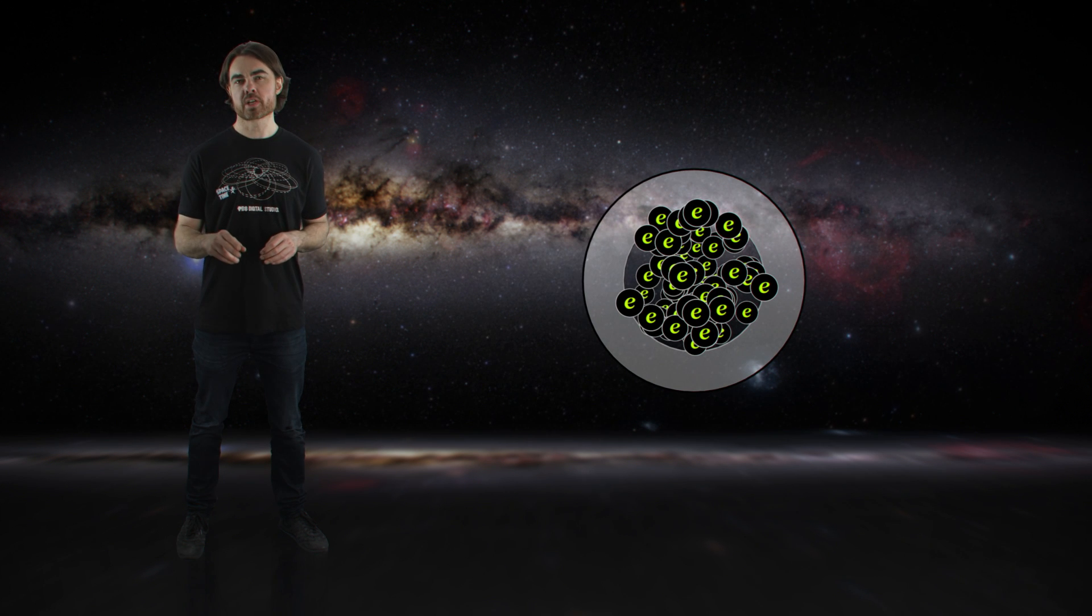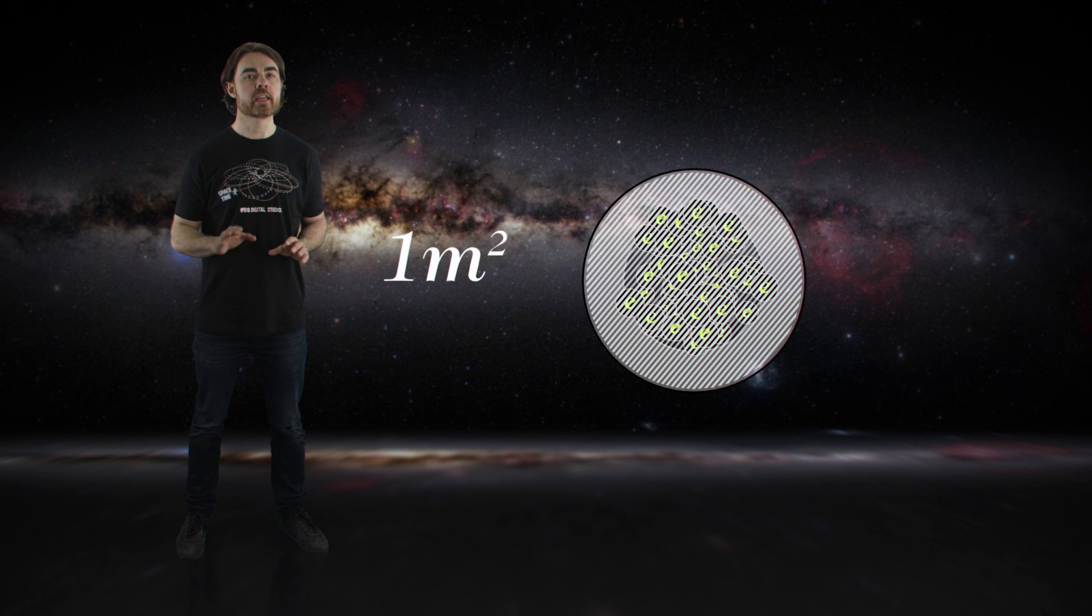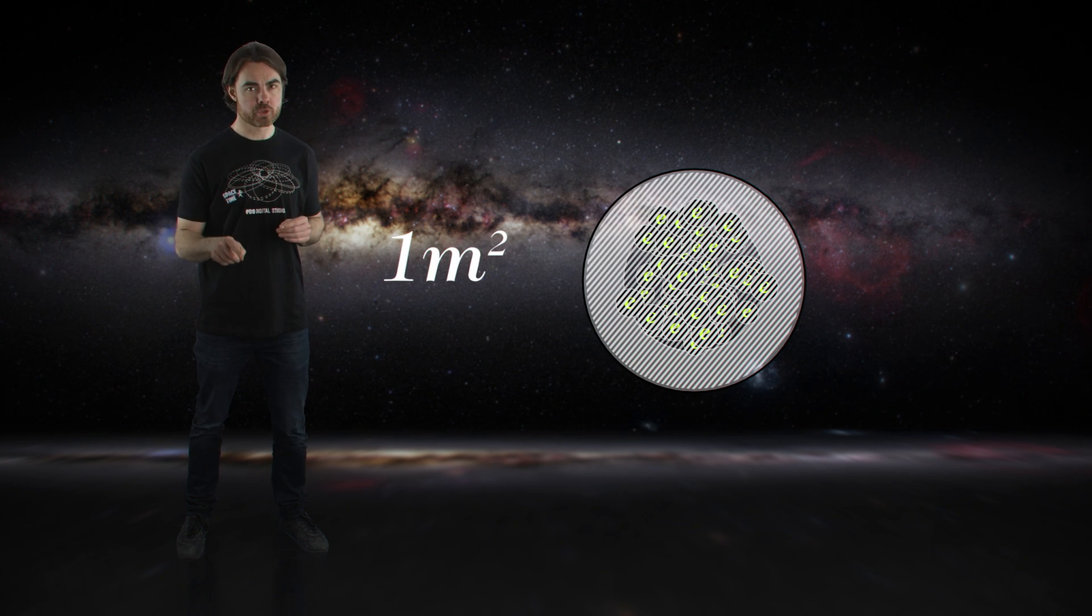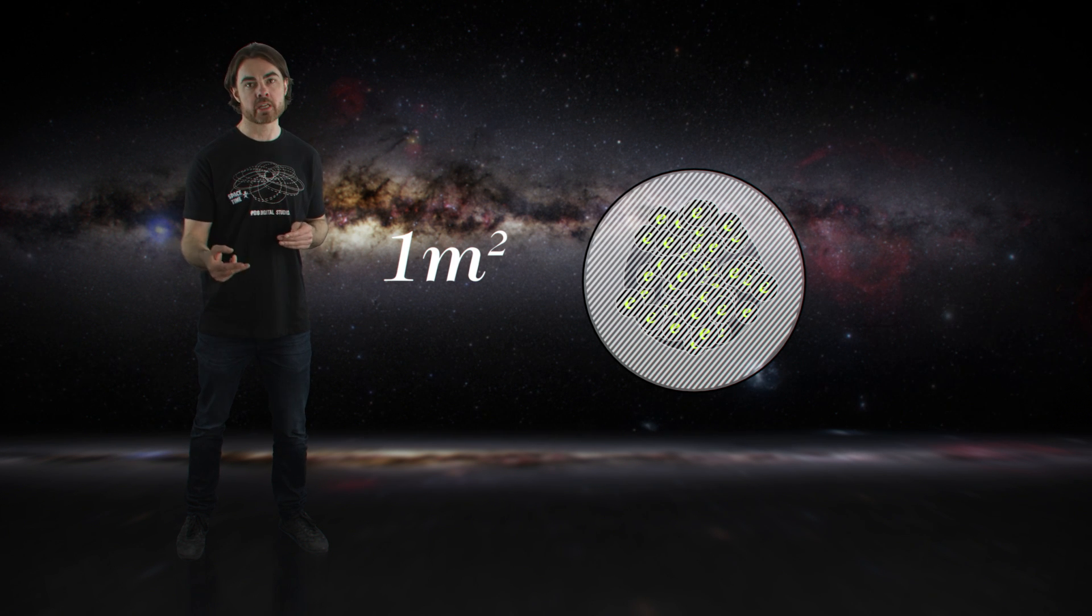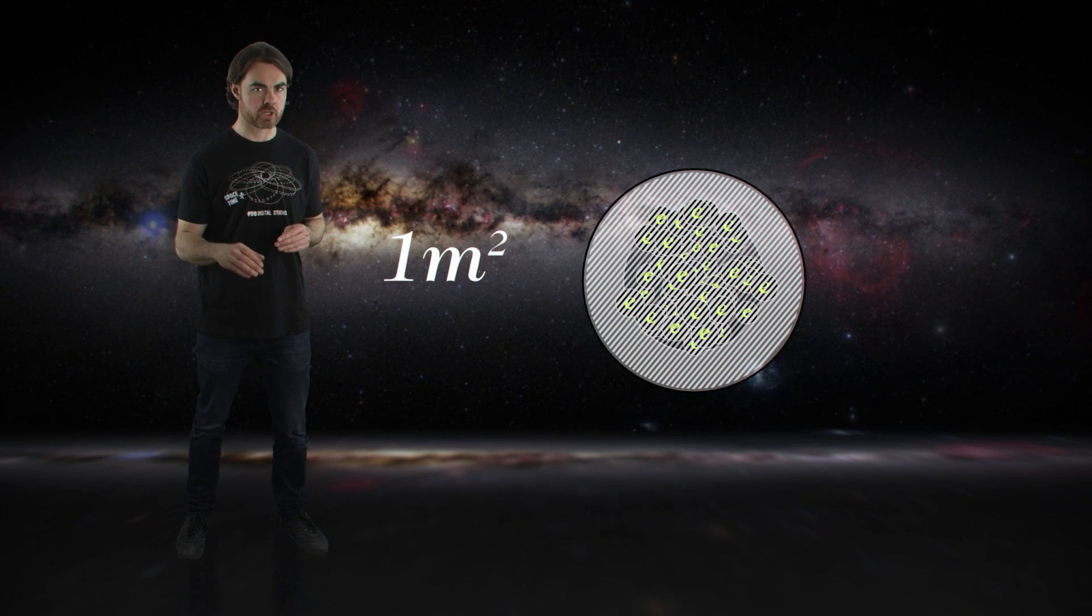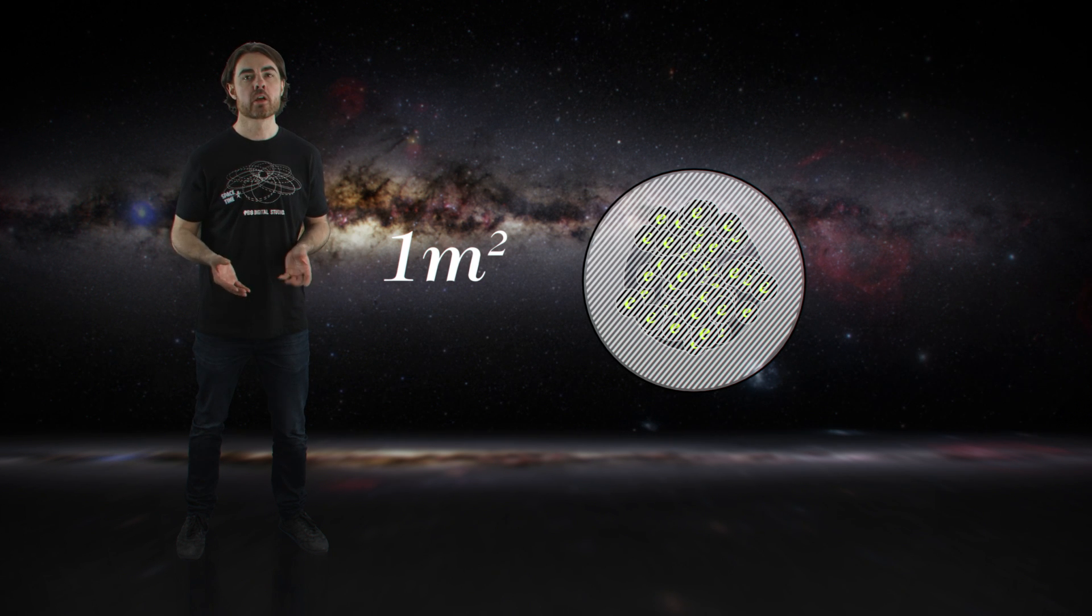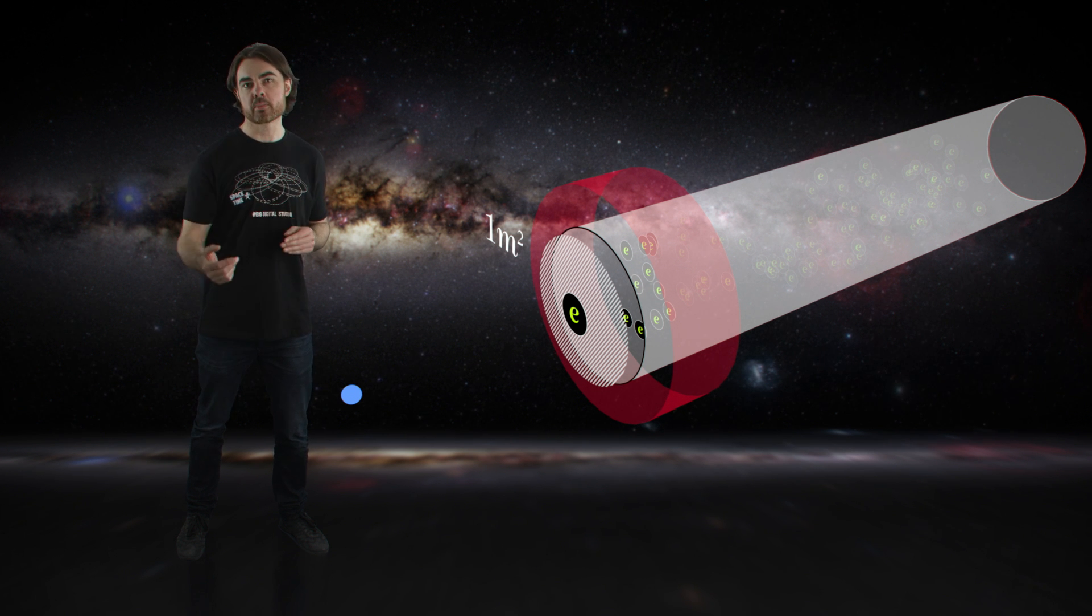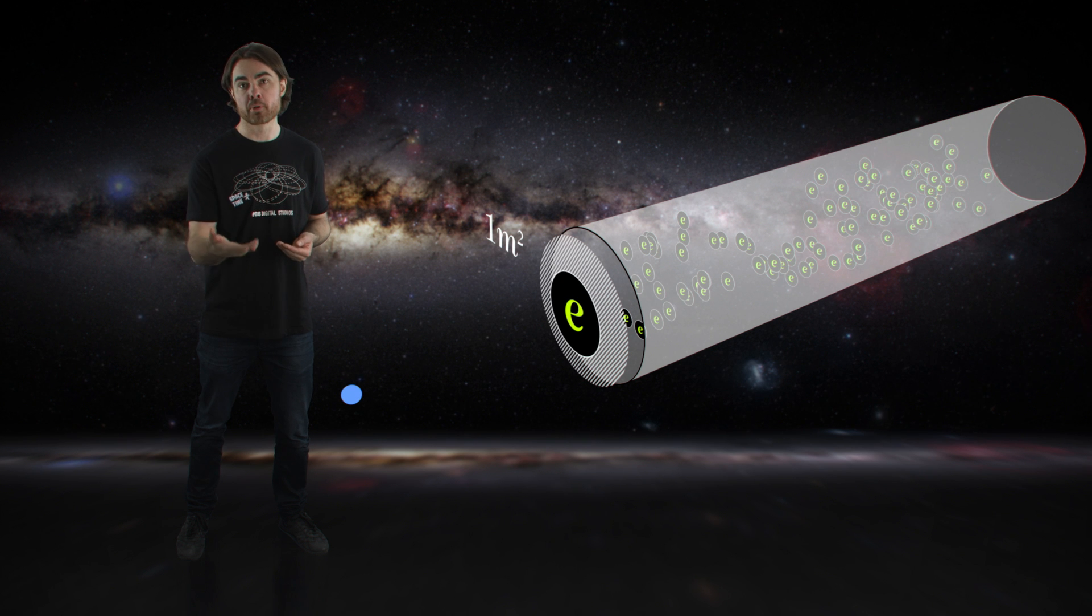If we say the cross-sectional surface area of the column is a square meter, then each one meter length of the column has a fraction blocked equal to the number of electrons in that column segment, which is just the electron density, times the scattering cross-section of the electron. Divide the cross-sectional surface area of the column by the blocked surface area, and we have the number of these one meter segments before all the photon's possible paths forward are blocked.